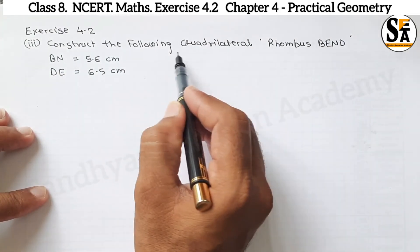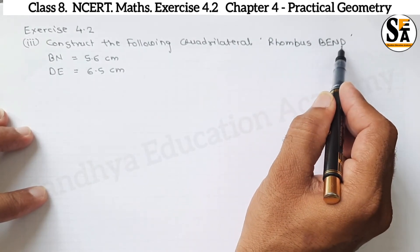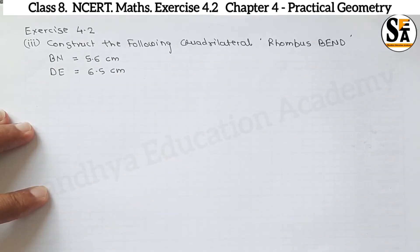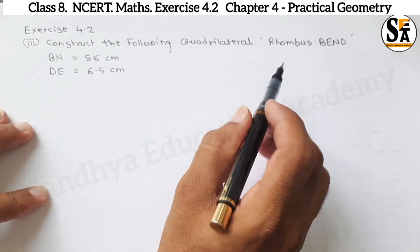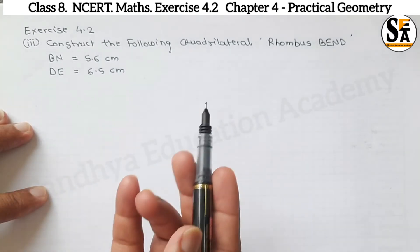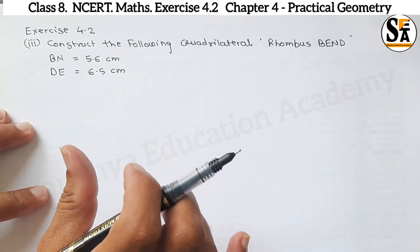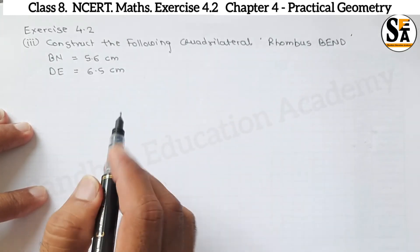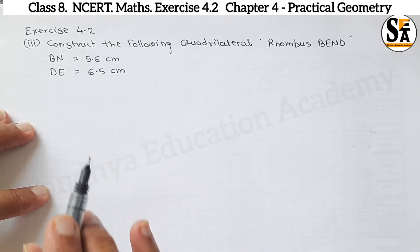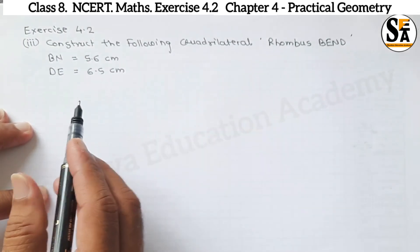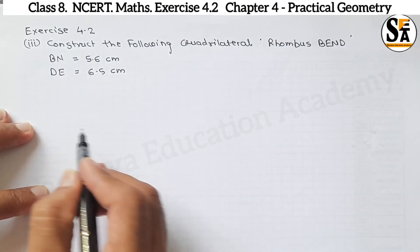Now see Question Number 3 of Exercise 4.2: Construct the following quadrilateral — rhombus BEND. Two dimensions are given. For constructing any quadrilateral we require minimum five dimensions, but for a rhombus we need only two dimensions because it is a special quadrilateral whose opposite sides are parallel and equal. Diagonals of a rhombus bisect each other and are perpendicular to each other. Using these properties we will construct rhombus BEND.